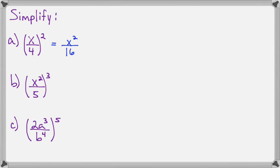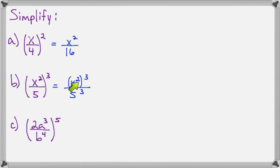For our next example we have x squared over 5, all raised to the third power. That means we'll have to raise x squared to the third power and 5 to the third power. Now x squared to the third power is going to be x to the sixth. Remember, this is a power rule application, so 2 times 3 is 6.